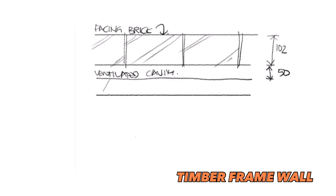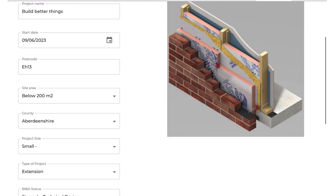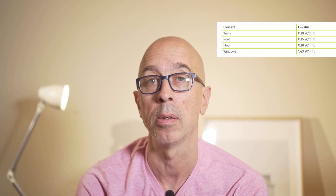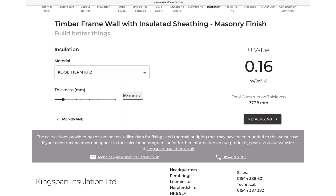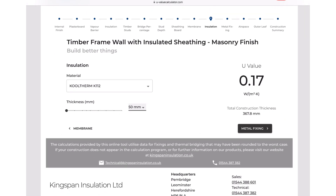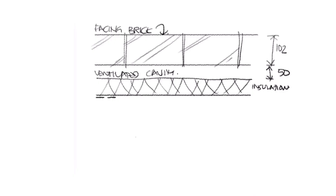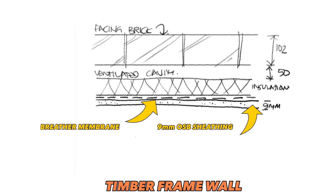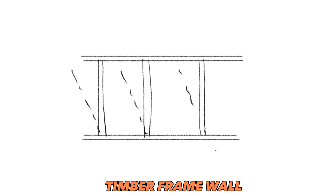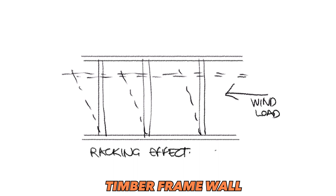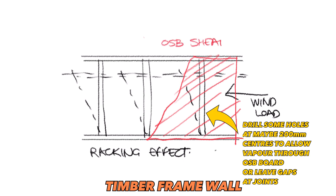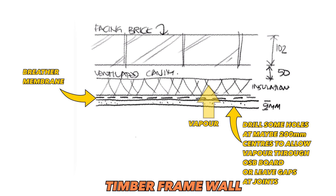Next we need our cavity insulation sitting against the inner leaf — this is the only part of the wall whose thickness can change depending on the level of insulation you require. We can use online calculators to determine this, and why U-value calculations are so important nowadays. That cavity insulation sits against a breather membrane stapled to some sheathing. For a house extension, 9 millimetre OSB is fine. Sheathing stops any horizontal racking of the frame and also helps with air tightness. I'll put some holes in OSB or ply to allow vapour to pass through the sheet and get to the breather membrane.